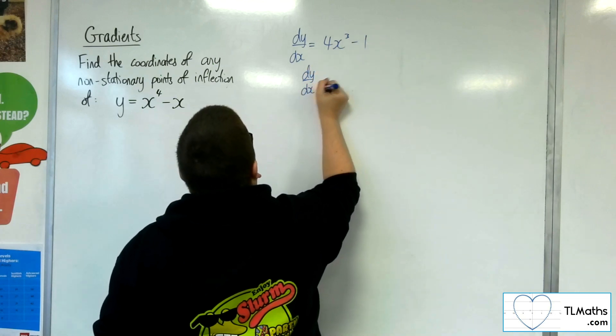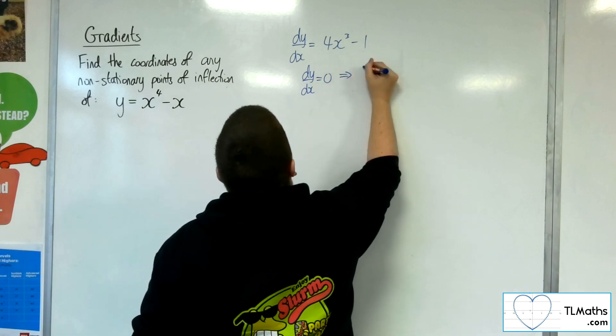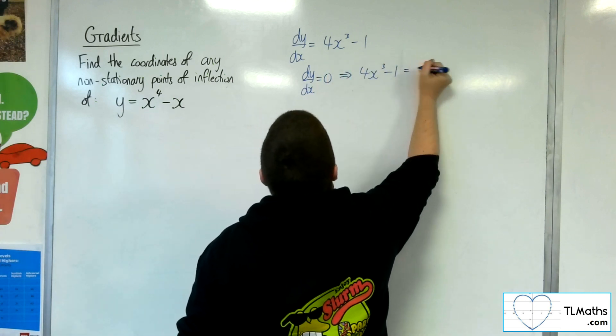So I want to find the stationary points, so I'm going to put the first derivative equal to 0: 4x cubed minus 1 is 0.